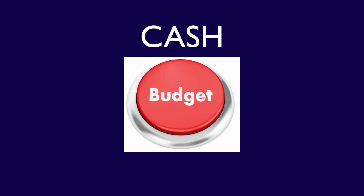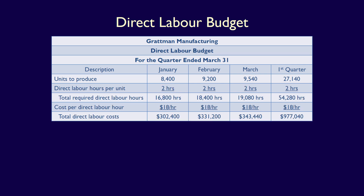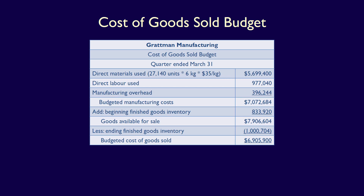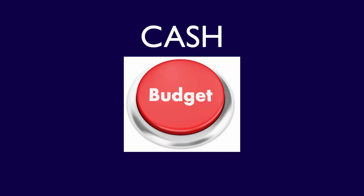Cash flow is the lifeblood of an organization, and in this video we're going to start the process of understanding the cash budget. We've already completed the following budgets in the master budgeting process for Gratman Manufacturing: sales budget, production budget, direct material budget, direct labour budget, manufacturing overhead budget, ending finished goods inventory budget, cost of goods sold budget, selling and admin expenses budget, and the budgeted income statement. Now we're going to start developing the cash budget, our last budget in the master budgeting process.